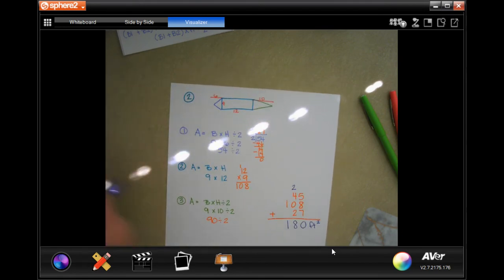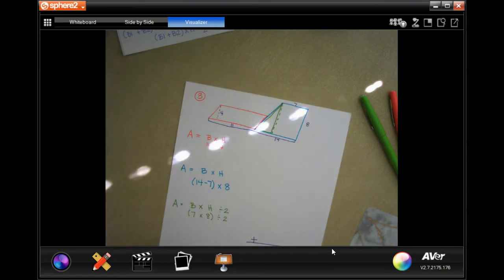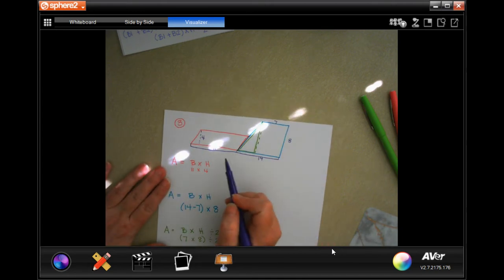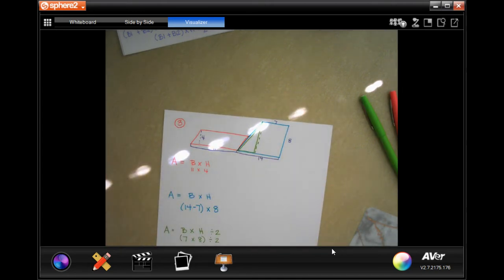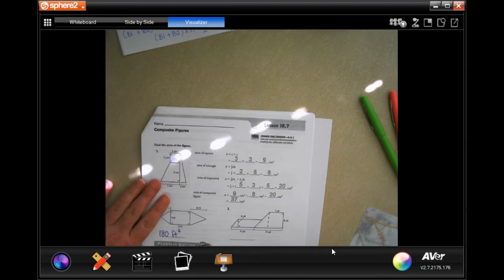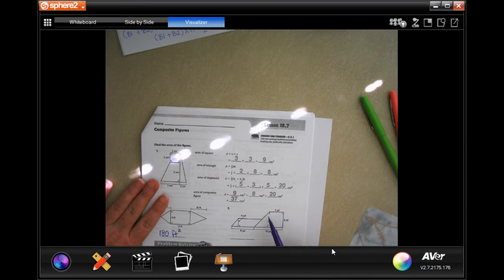We're going to do number three together. It actually only has two shapes on there, but you'll notice on our homework page that I actually split off that triangle because I don't know how to find the area of all of this, but I do know how to find the area of a square and a triangle and a parallelogram.